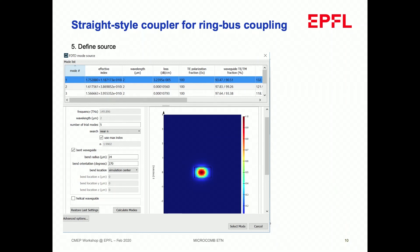For a bent waveguide, the mode is pushed outward to the bend, so you have to specify the bend radius — here it's about 24 microns — and the bend orientation, which tells whether the waveguide is bent in the X plane or Y plane. Here we put 270 degrees. The bend angle 270 degrees means the center of the ring is in a specific position, while 90 degrees would place the center on the other side. Knowing where the bus waveguide is placed tells you which angle is correct — if the ring resonator is in a certain position, 270 degrees is correct. Then you calculate and select the mode.